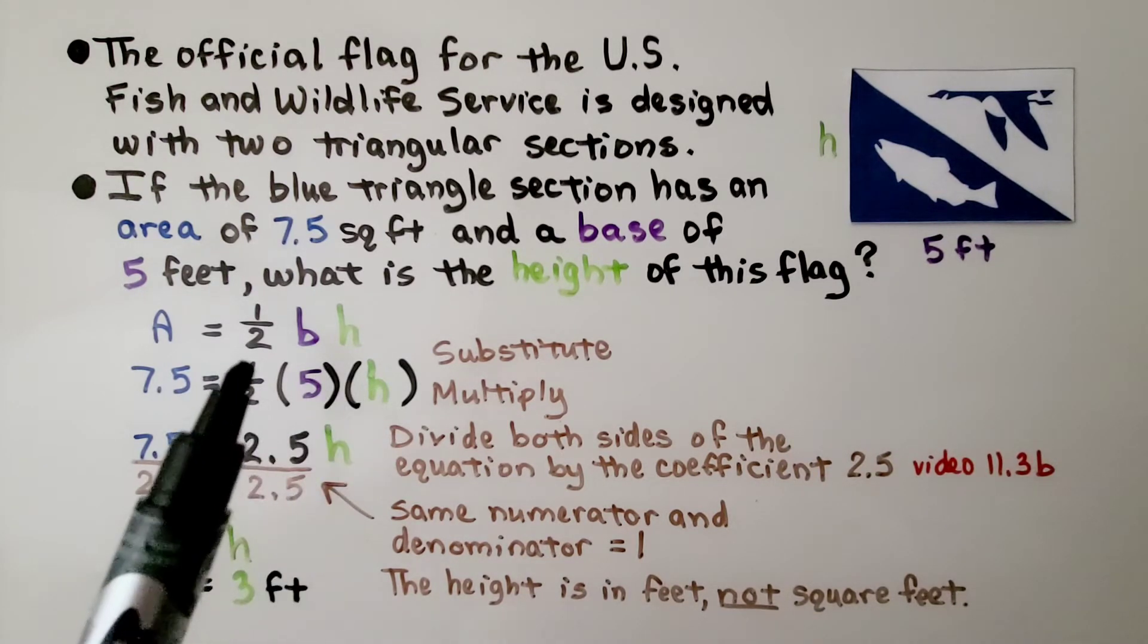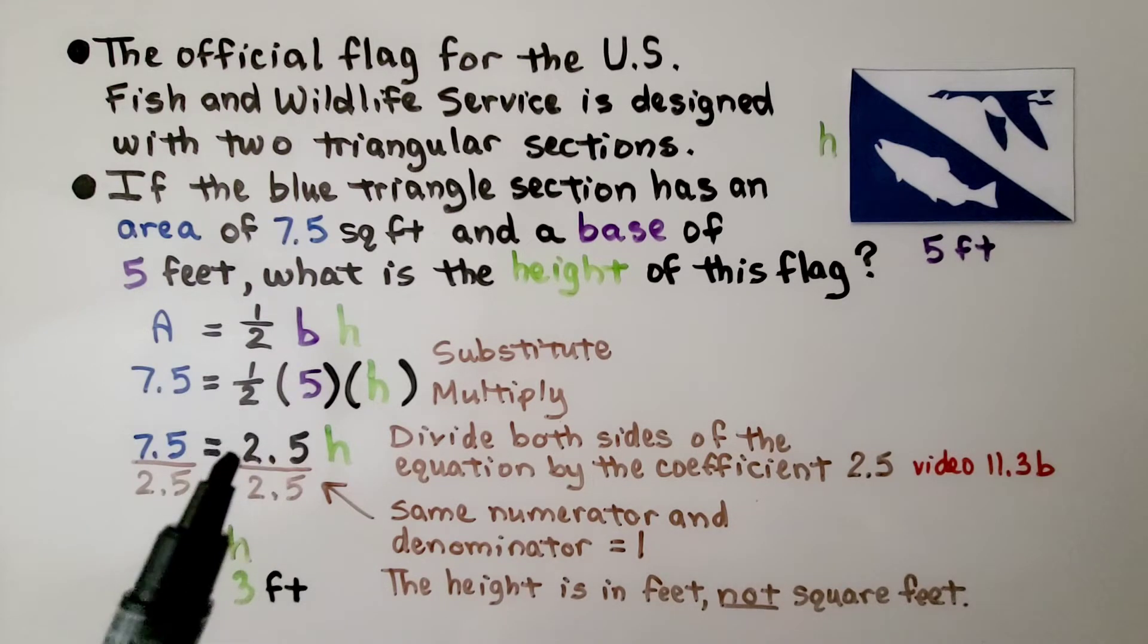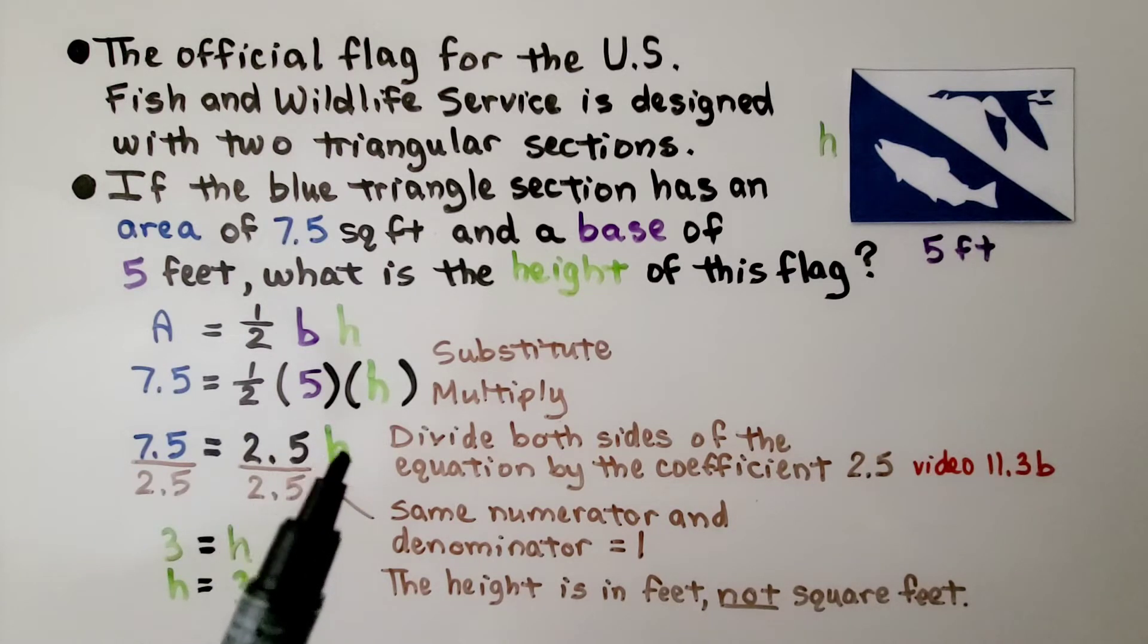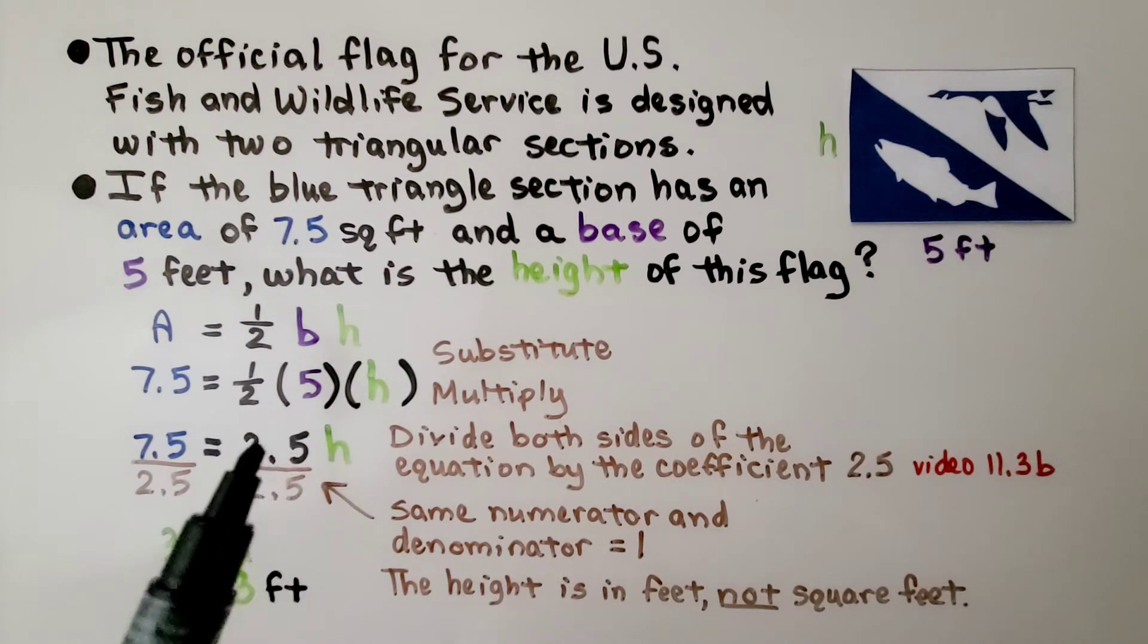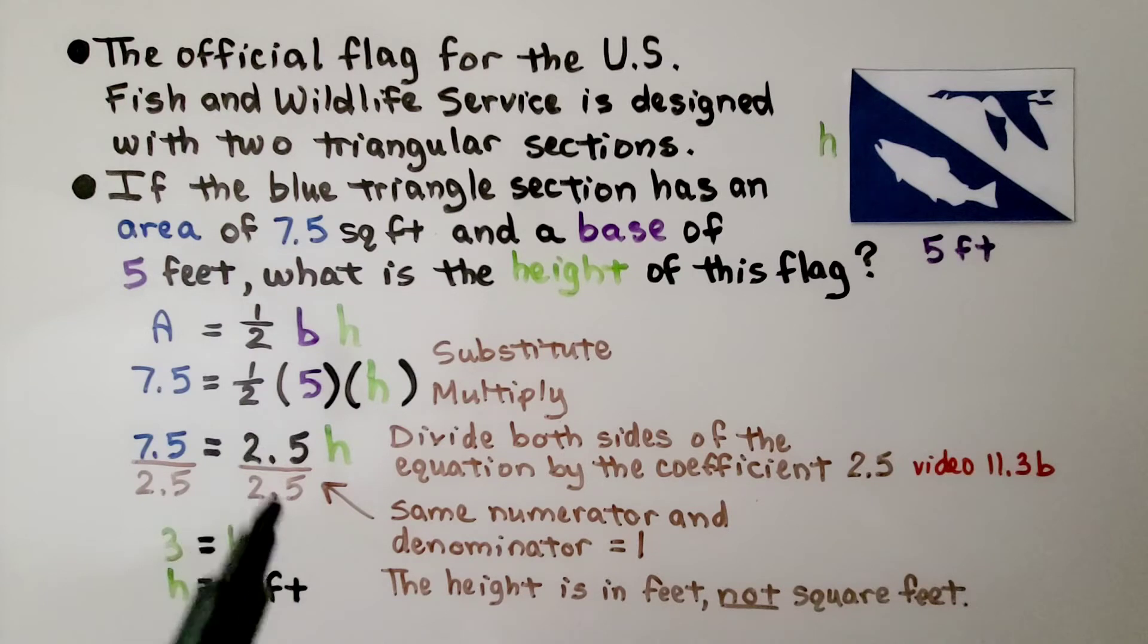We multiply half times 5 and half of 5 is 2.5. We don't know h, so that's going to go here. And the 2.5 is now our coefficient. We can divide both sides of the equation by the coefficient 2.5.